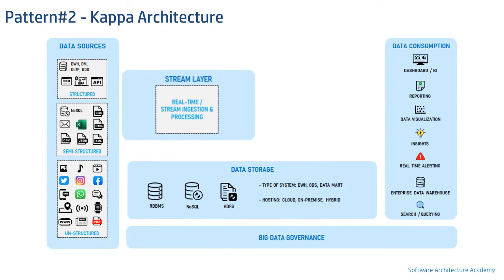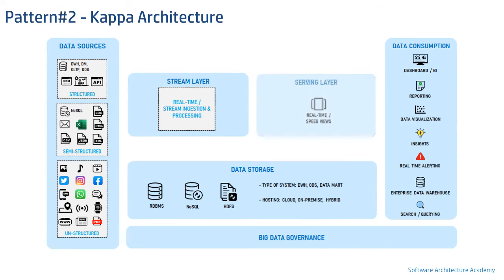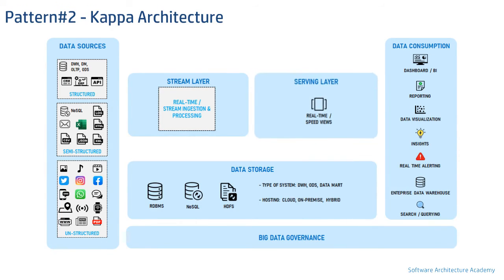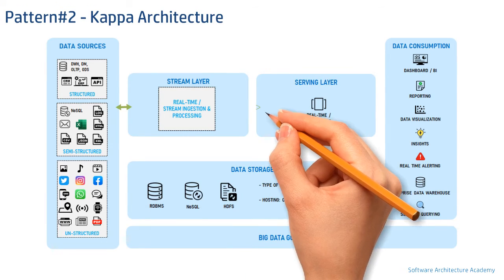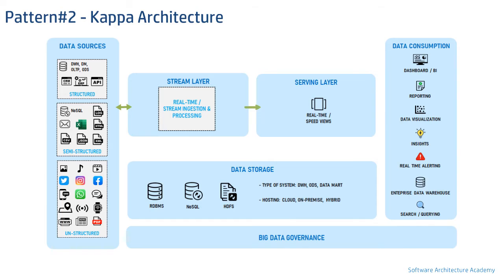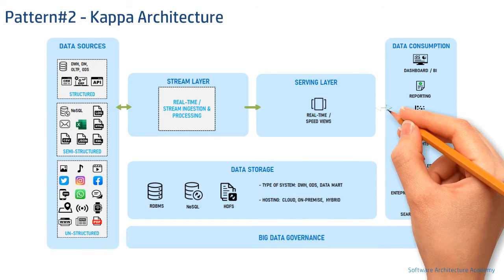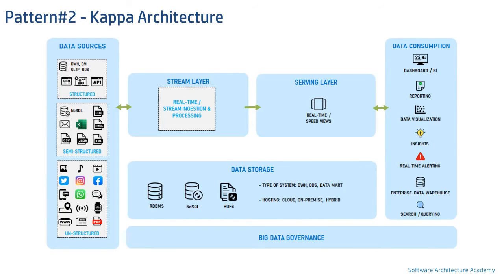Now let's discuss the Kappa pattern. Here, the real-time processing is done using a stream layer, which outputs the computed value to a dedicated serving layer. This output is then used by the consumption layer. As you can see, batch processing is eliminated in Kappa architecture.